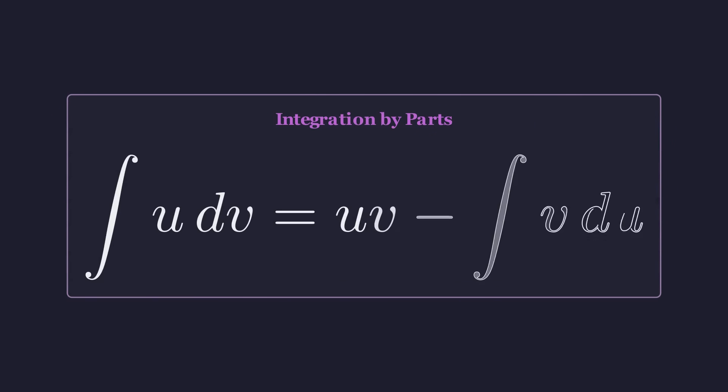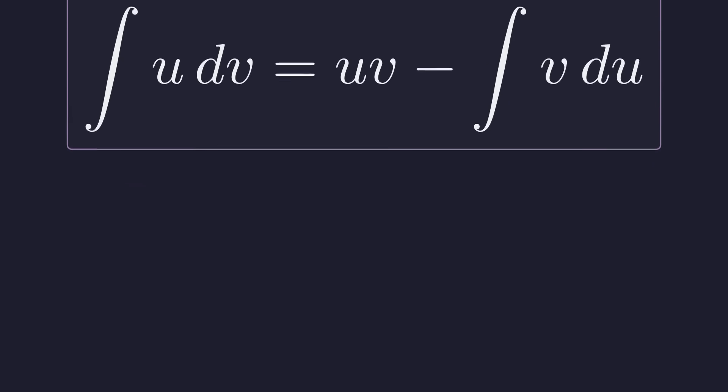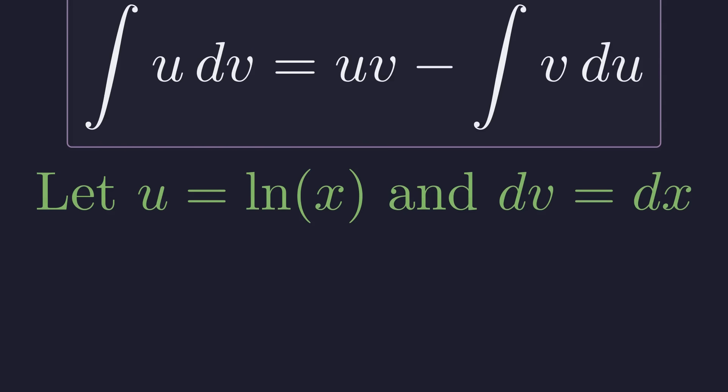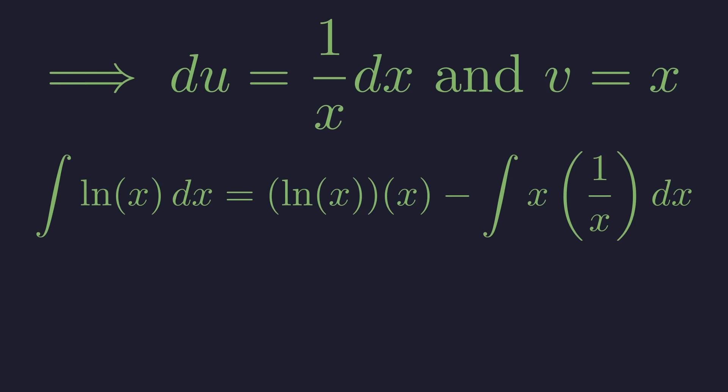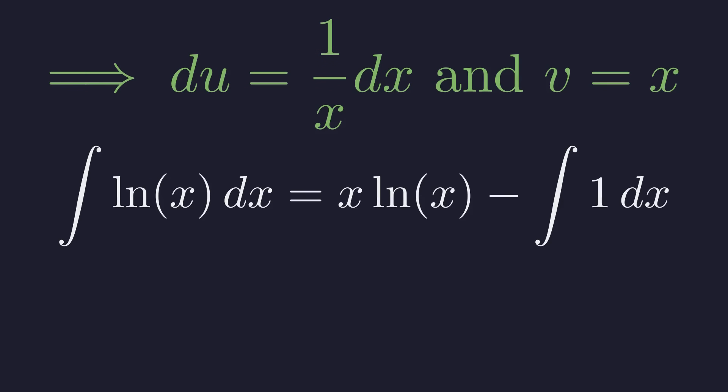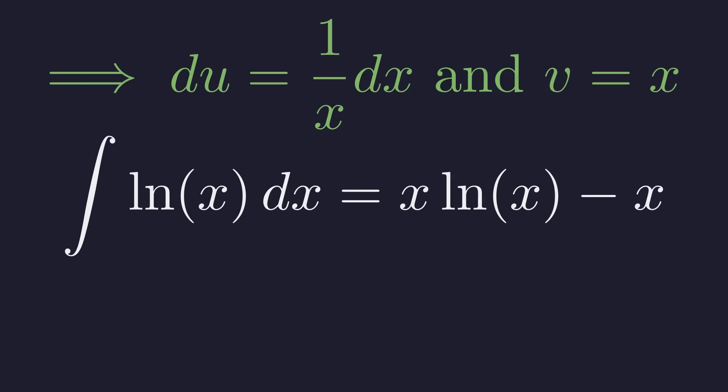To solve the integral of the natural log of x, we'll use integration by parts. This technique is useful when we have an integrand that's a product of two functions. We choose u to be the natural log of x, since its derivative is simpler, and dv to be dx. Then we differentiate u to get du and integrate dv to get v. Plugging these into the integration by parts formula gives us x times the natural log of x minus the integral of x times 1 over x. The x terms cancel, leaving us with the integral of 1. The integral of 1 is just x. So the indefinite integral of the natural log of x is x times the natural log of x minus x.